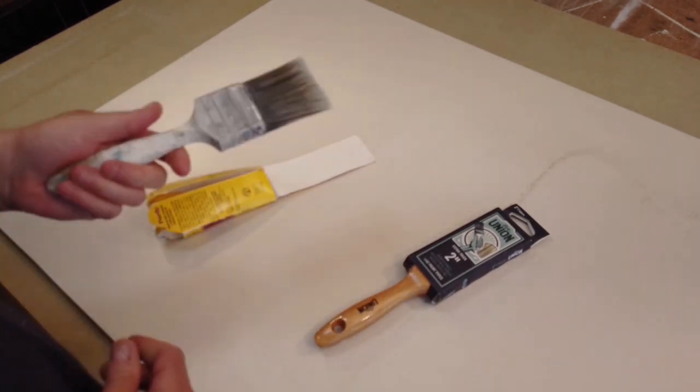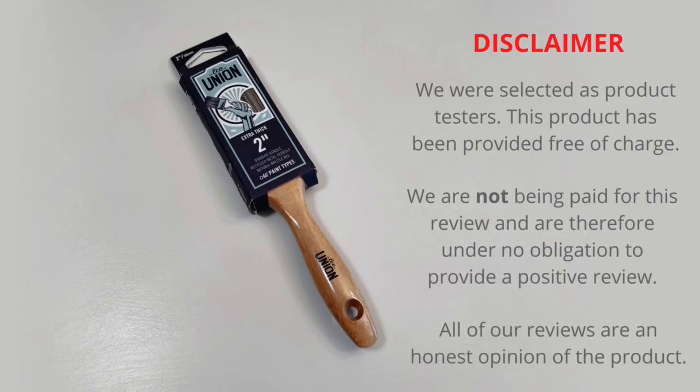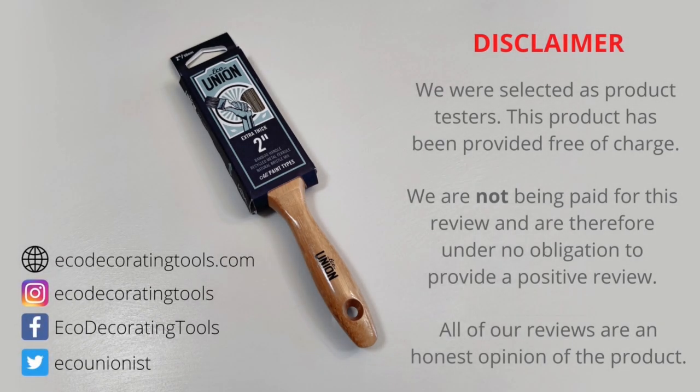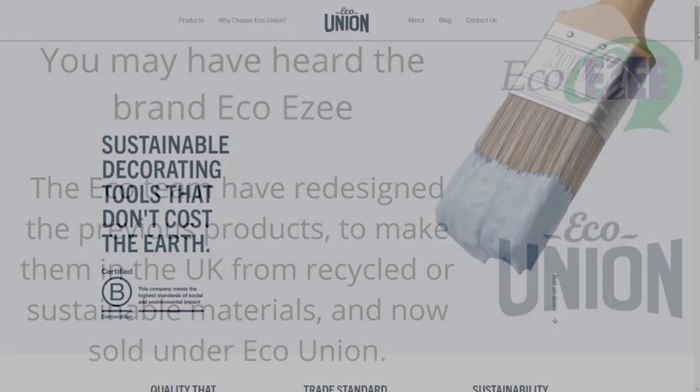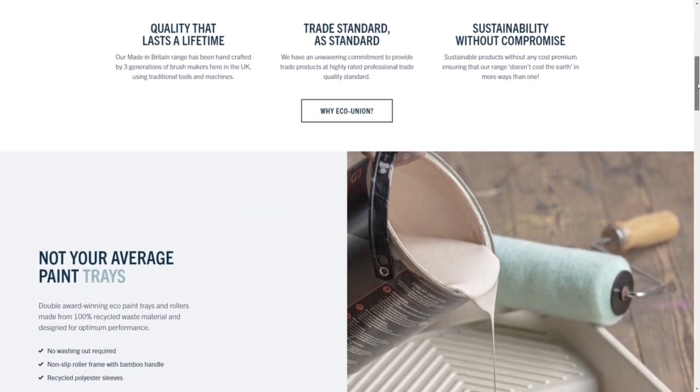So I'm going to be doing a direct comparison. This is a Purdy 2-inch Standard Elite paintbrush. But a full disclaimer, this item from a company called EcoUnion has been sent to me. I haven't paid for it with my own money, but I will give you an honest review of the product.